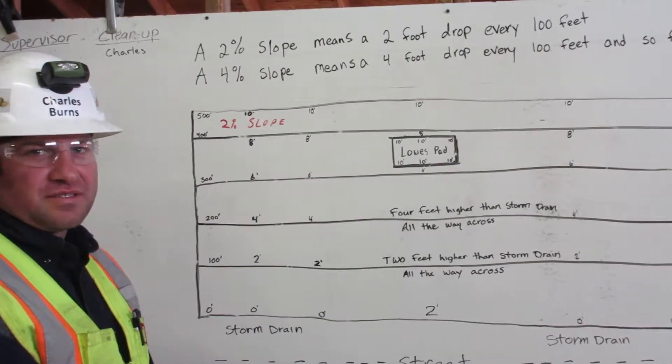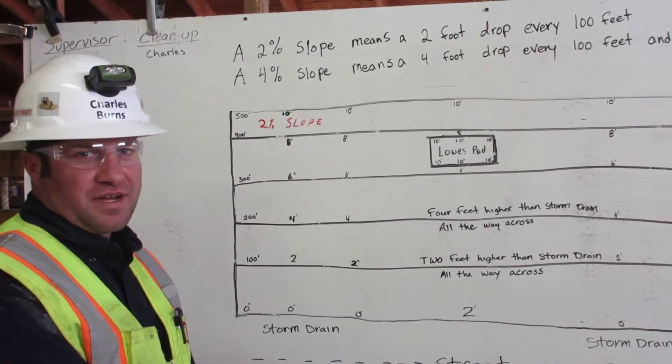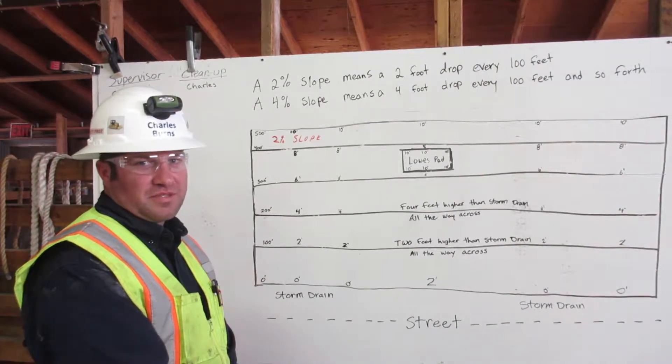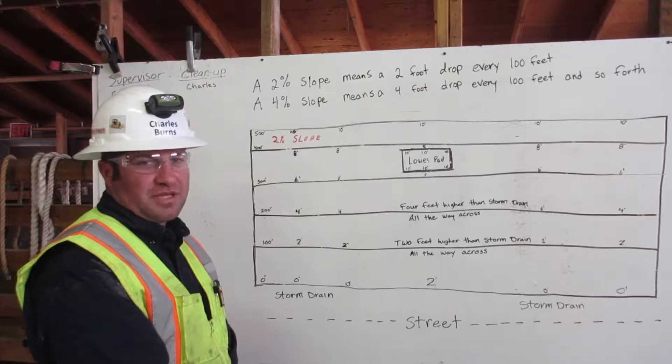I am Charles Burns. I am construction math certified. I am going to demonstrate to you how to lay out a 2% slope using a parking lot example. Let me show you.